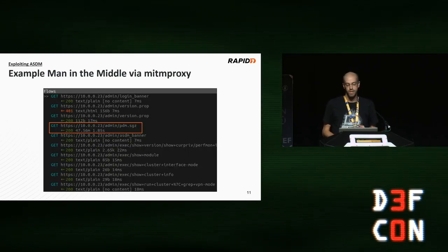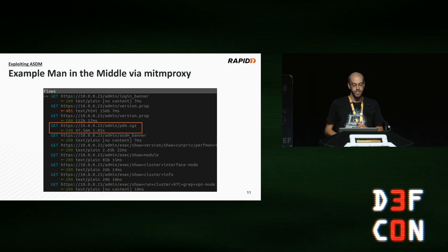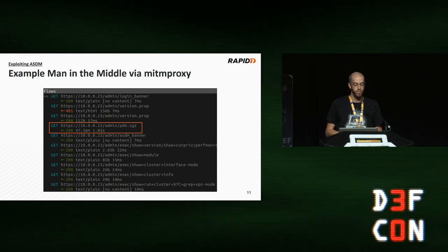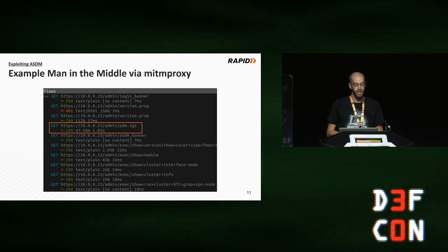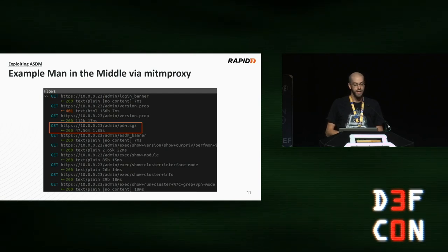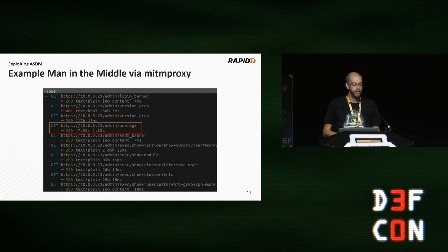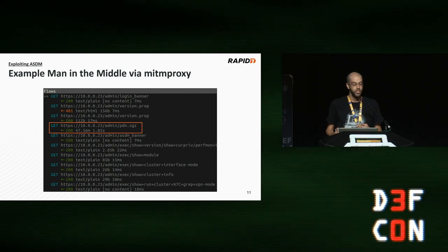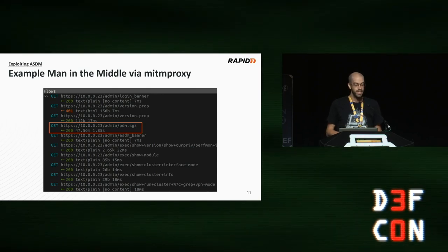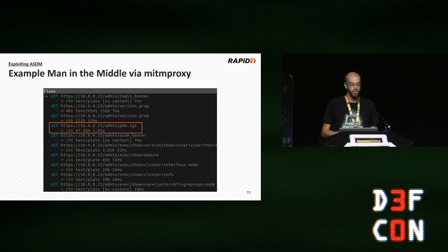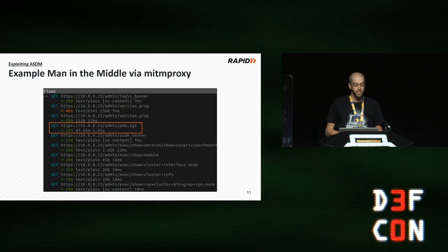This isn't theoretical. Pictured here is a screenshot of me using the popular tool mitmproxy on the ASDM client. I used the default mitmproxy certificate and the ASDM client gave no indication that it was under attack. This should give the attacker full control over the ASA — but I might also be able to gain access to the administrator system, because recall that the PDM.SGZ file is full of Java classes.